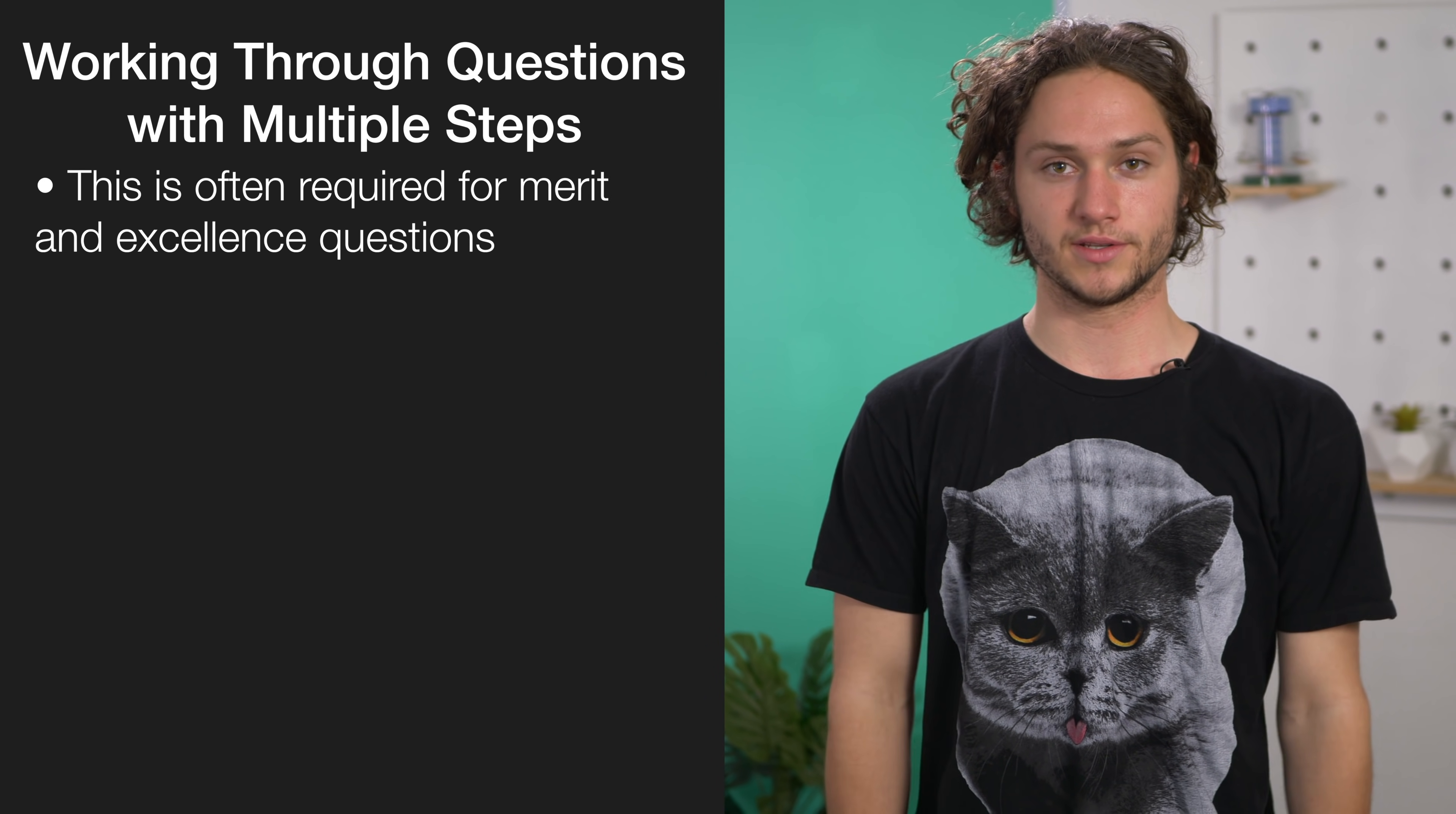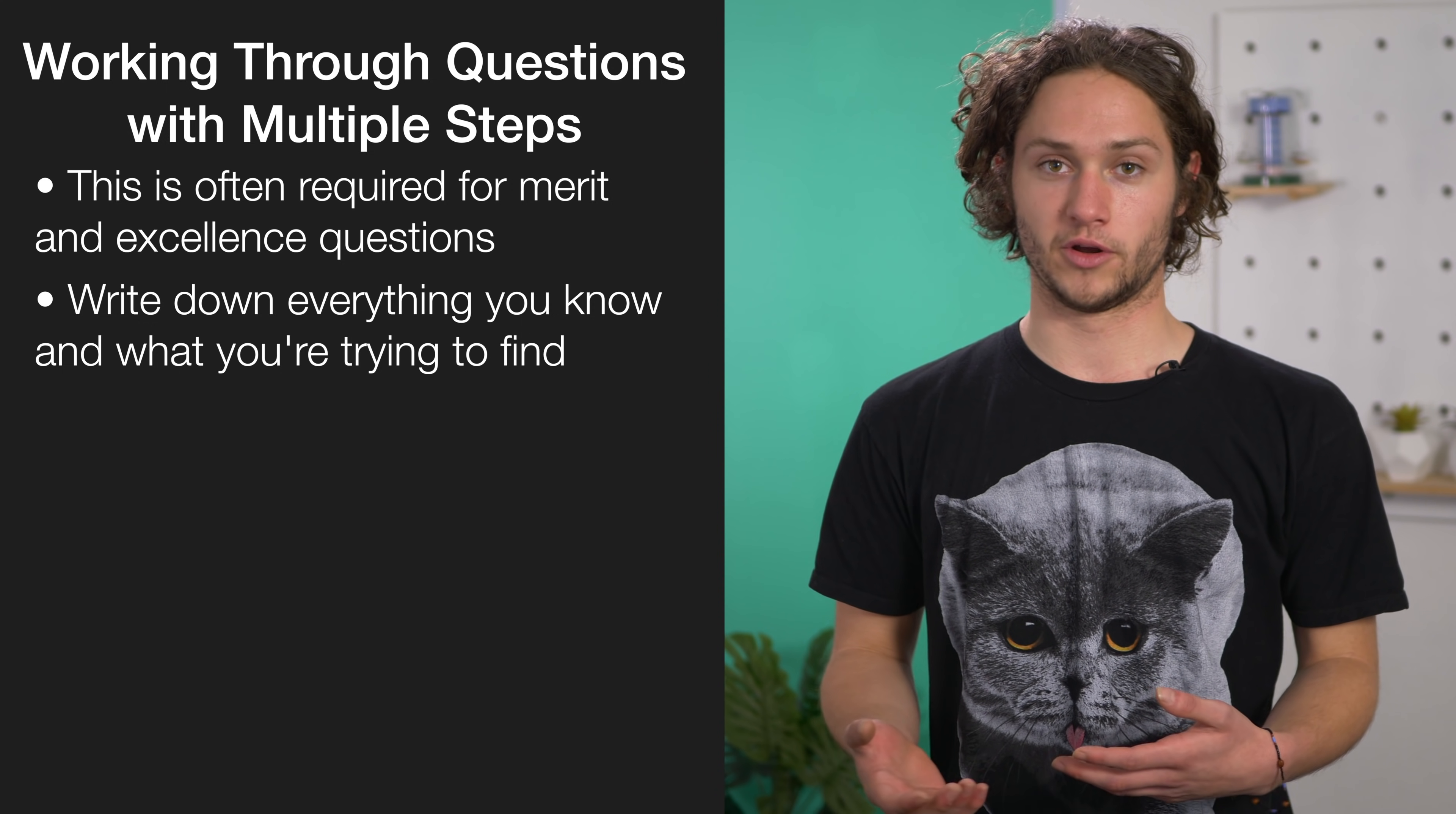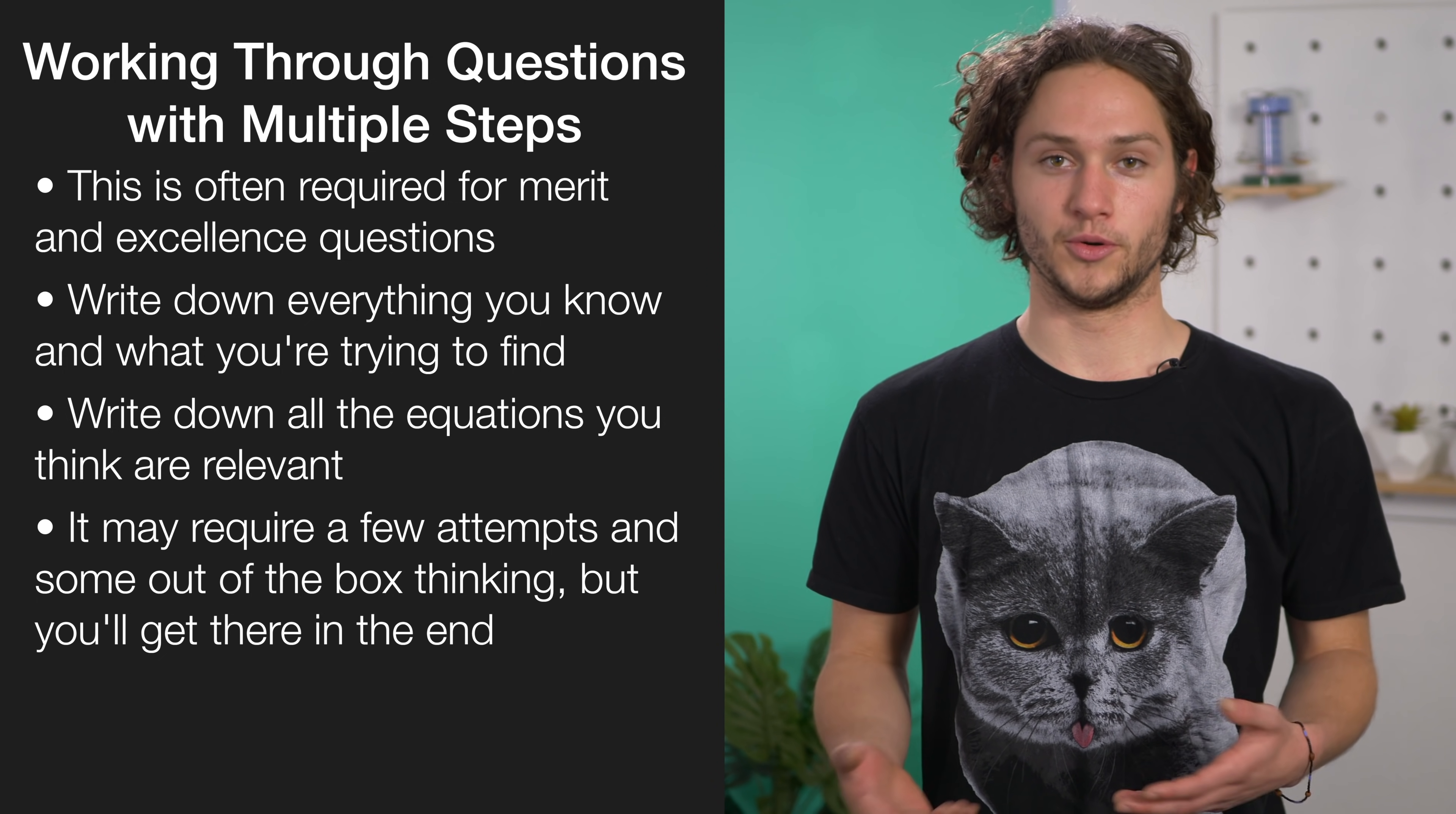Like the other Level 2 physics standards, Merit and Excellence questions often involve multiple steps for calculations. Again, a really good strategy is just to write down everything that you know about the scenario and then write down what you're trying to find. You usually won't have a single equation that allows you to get to the final answer, but you may have to use two or three different equations to get there. So write down any equations that you think are relevant and try to calculate the quantities that will eventually get you to the final answer. It may take a little bit of out-of-the-box thinking and a little bit of problem solving, but if you practice them enough, you'll get there in the end.